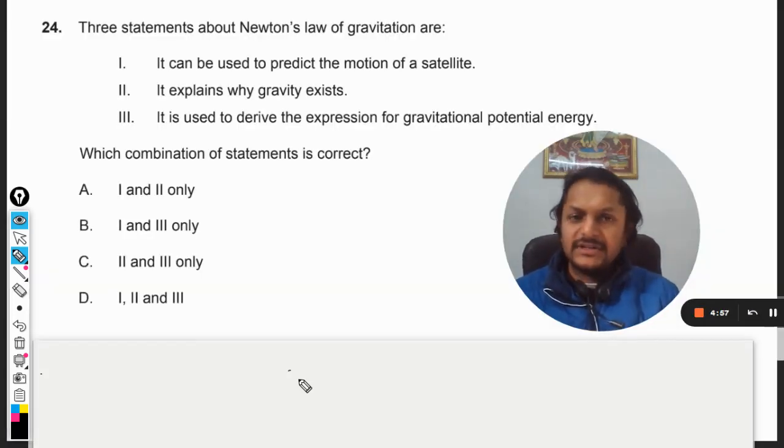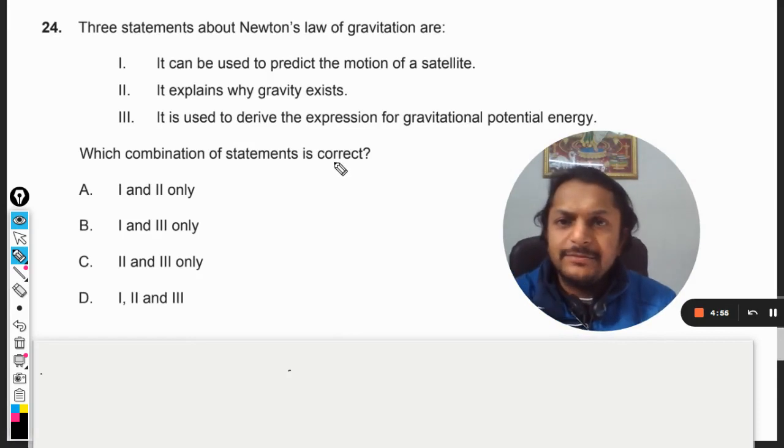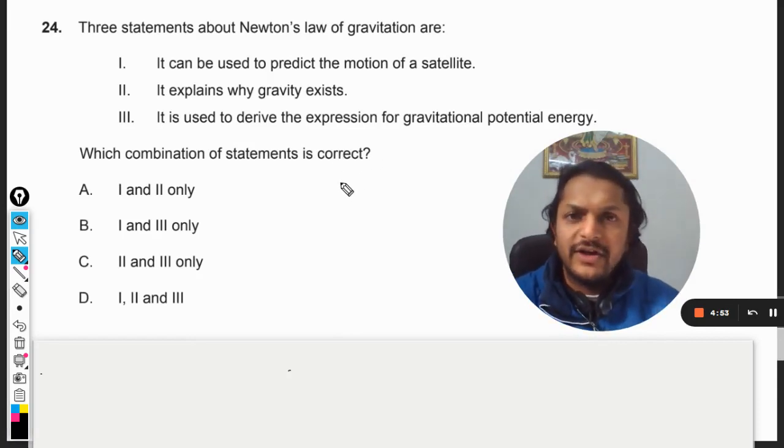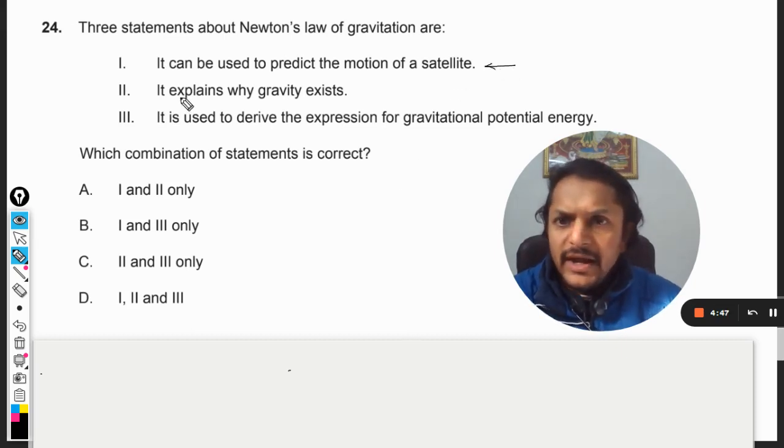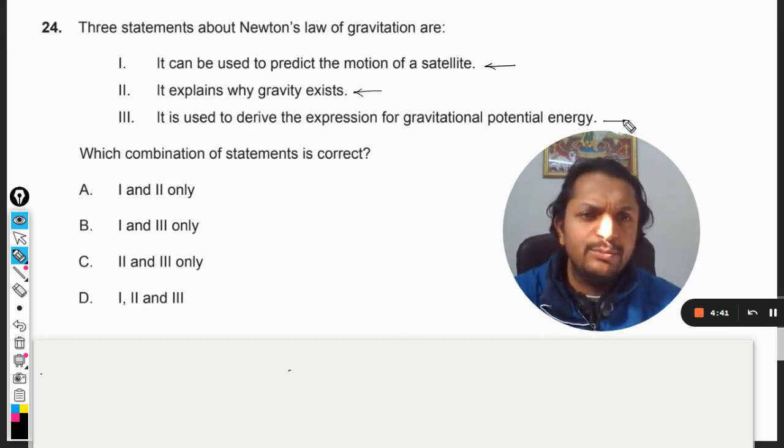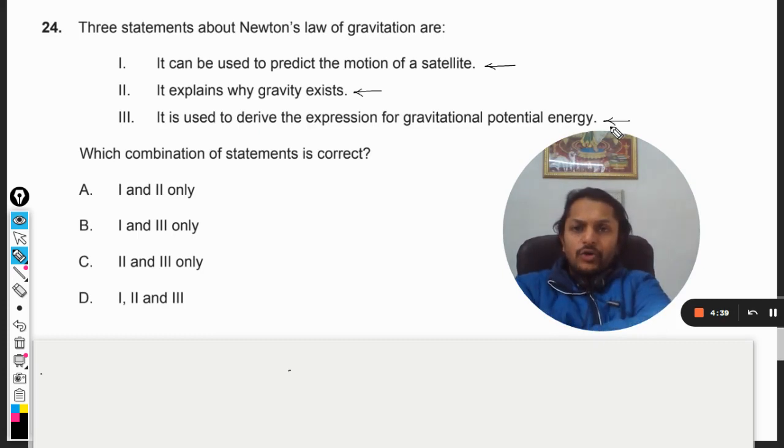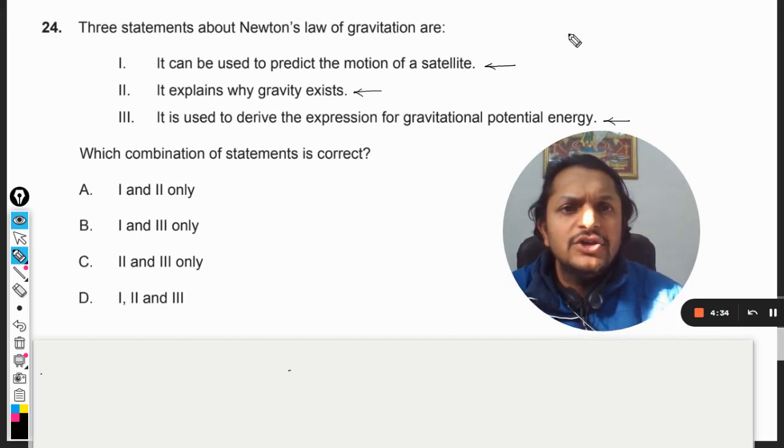Okay dear students, let us see what is there in this question. Three statements about Newton's law of gravitation are: it can be used to predict the motion of a satellite, it explains why gravity exists, it is used to derive the expression for gravitational potential energy.